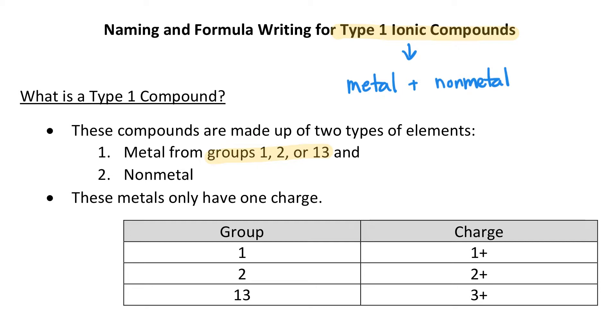The really interesting piece when classifying between Type 1 and Type 2 ionic compounds is that the cation, or the metal, is the thing that separates them. Whether it is in group 1, 2, or 13 means that it is a Type 1 ionic compound.